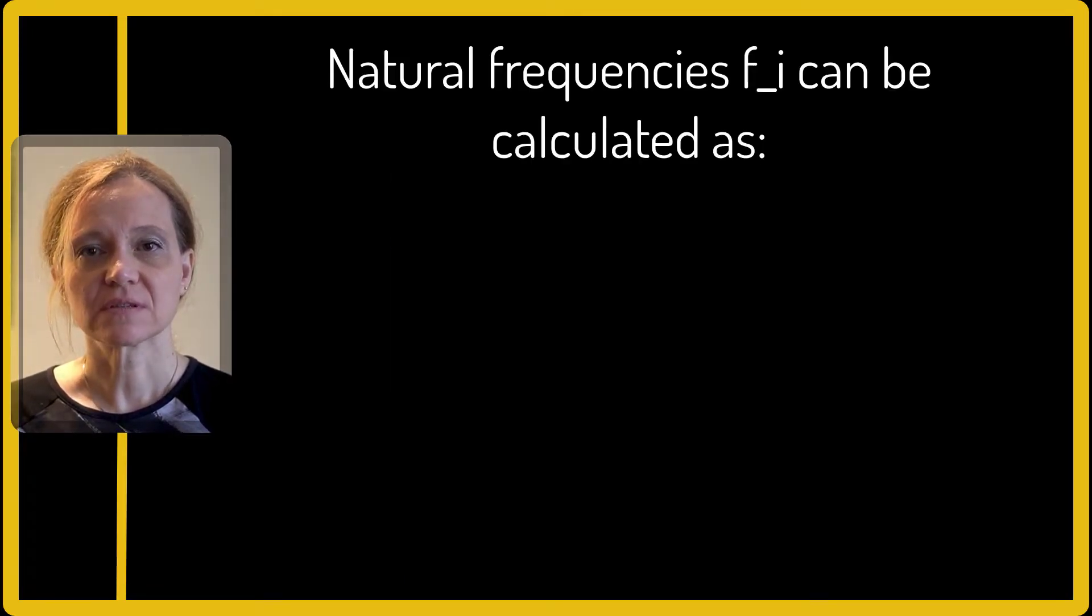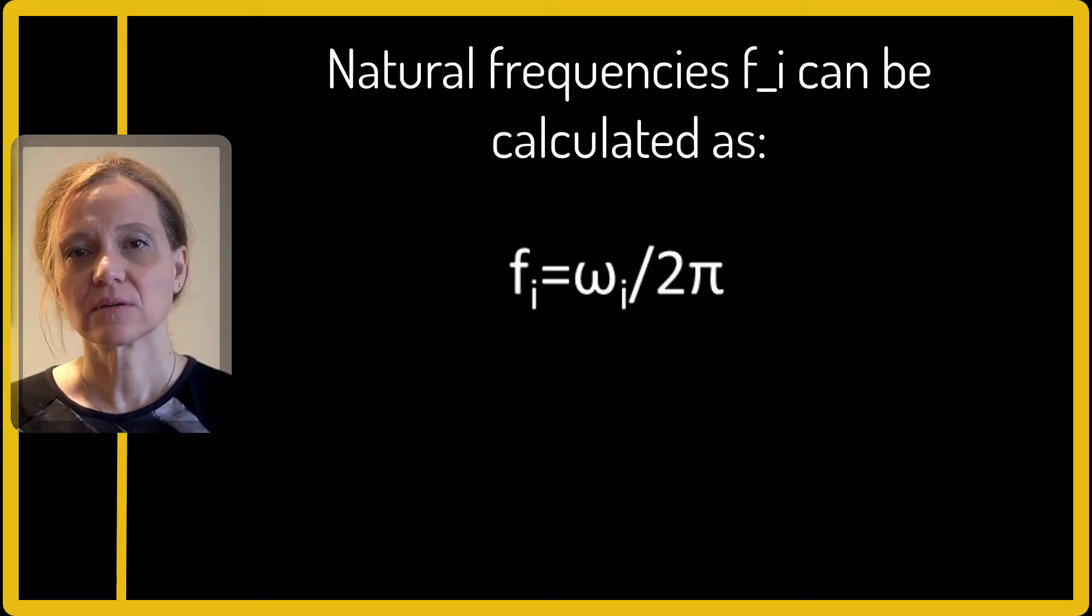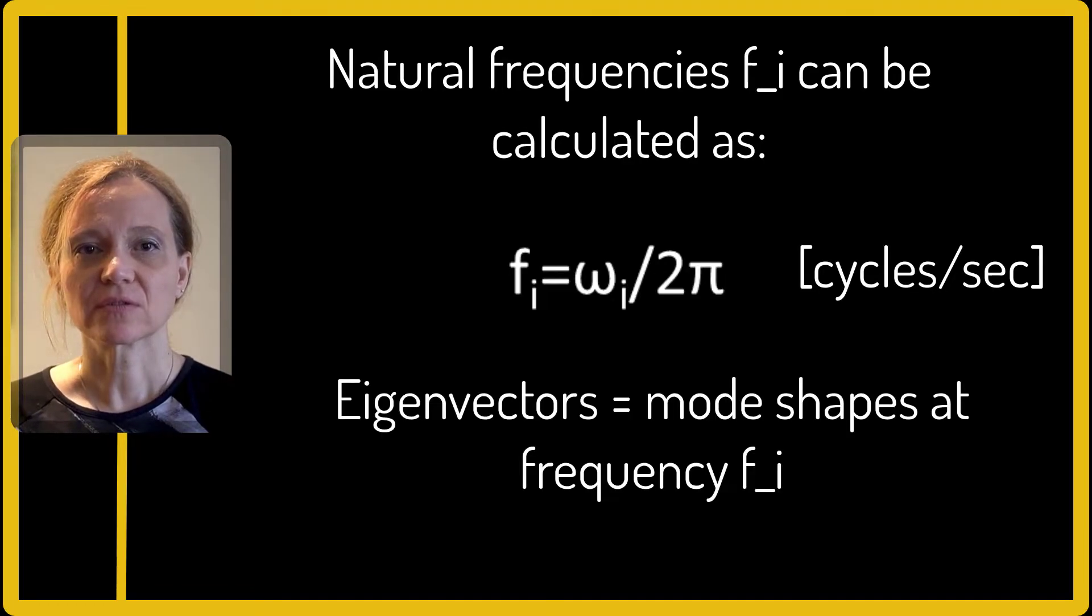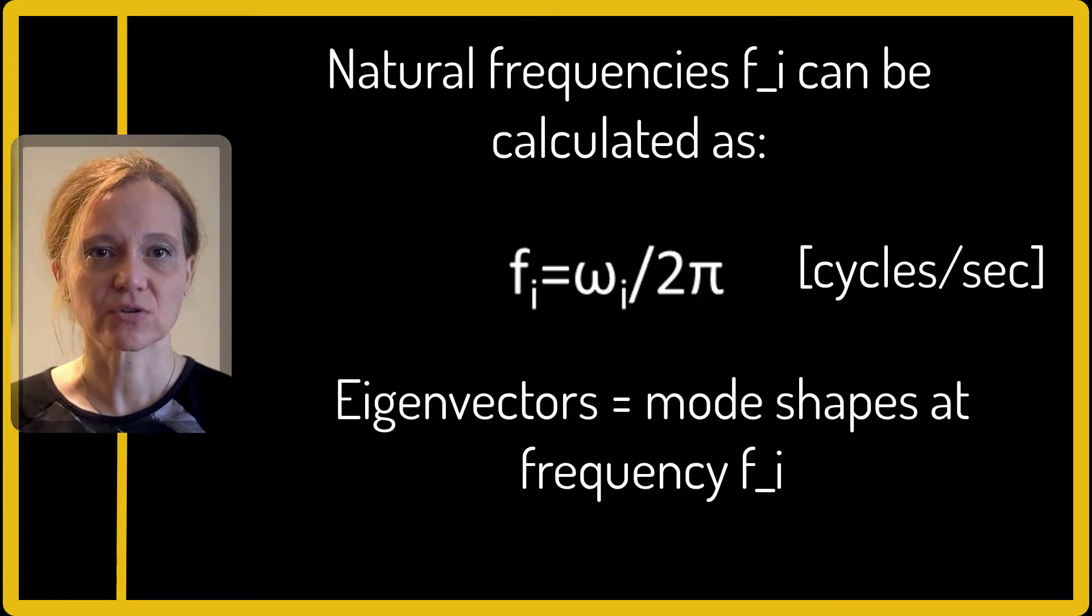Natural frequencies, fi, can be then calculated as fi equals omega i over two pi cycles per second. The eigenvectors represent the mode shapes obtained when the structure is vibrating at frequency fi.